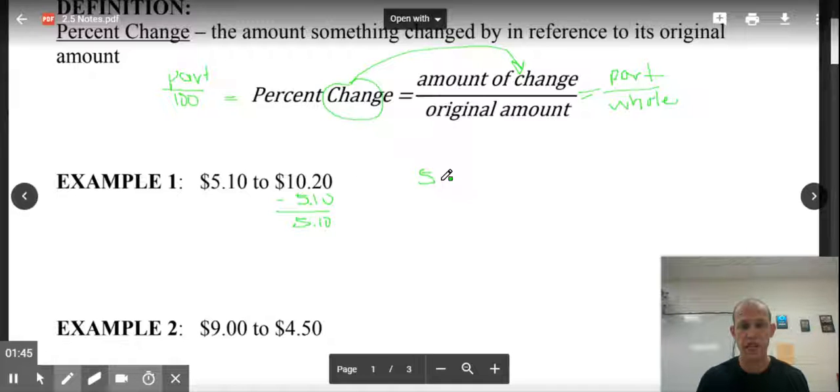So to find the percent change, we will take $5.10 divided by the original amount. If we started with this, that is our original. When we divide those, we get out the number one. But that's the number one. We want to change it to a percent. So the percent that equals is 100%. And we also have a label that goes with percent change. Did it increase or did it decrease? It went from $5.10 to $10.20. This was an increase. So this was a 100% increase.